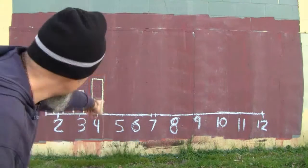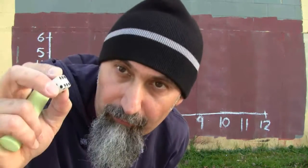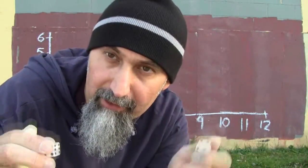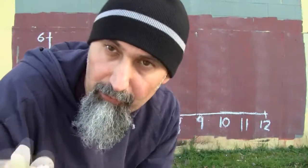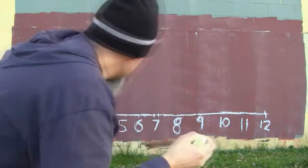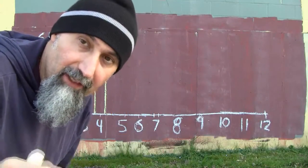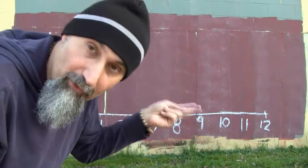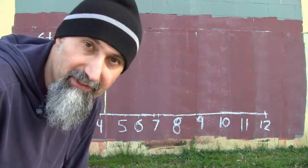For number five, you can get a one, two, three, or four on the first die, and you match it with the other die. There are four possible combinations — four possible ways to roll a five — and the probability is four out of six times one out of six, which is four out of 36.